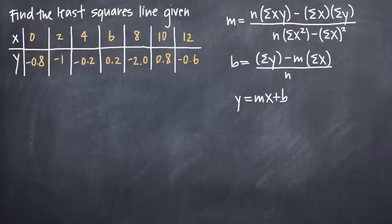Let's take a look. In this particular problem, we've been asked to find the least squares line, or the line of least squares, also called the line of regression, given this dataset here for x and y.